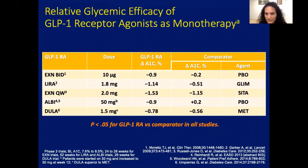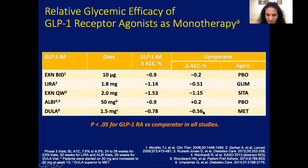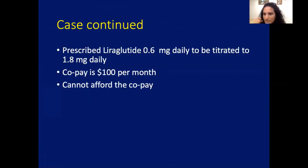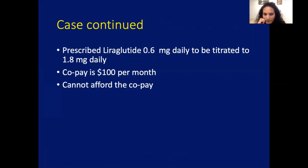As for glycemic efficacy, when used as monotherapy GLP-1 receptor agonists reduce A1C modestly compared to placebo. When compared to agents like glimepiride, exenatide and other GLP-1s all have some glycemic efficacy. You prescribed him liraglutide, titrated to 1.8 mg daily — the typical titration approach for GLP-1s — but he says it costs too much: a $100 per month copay that he can't afford.